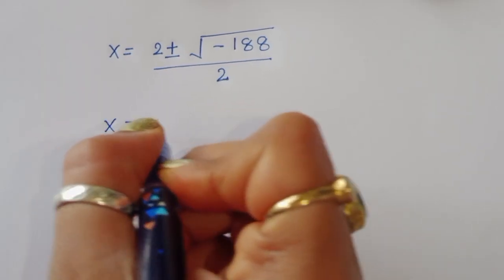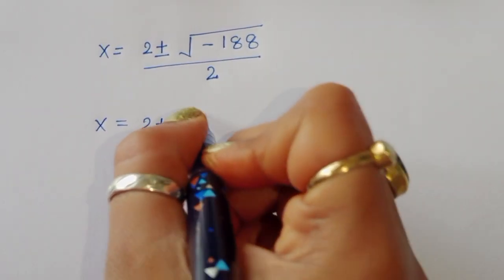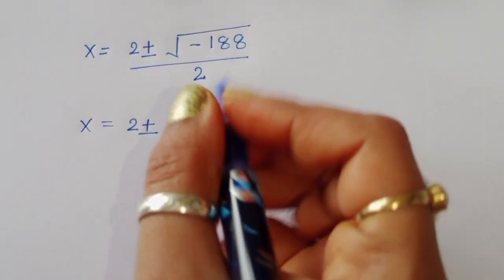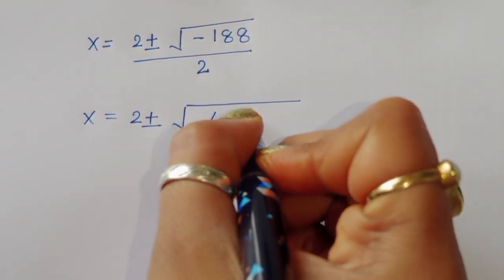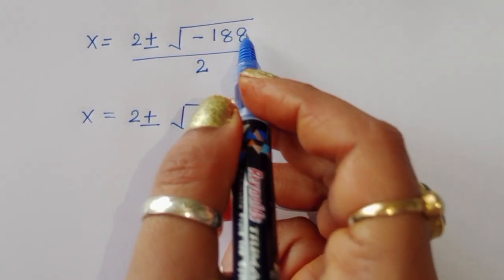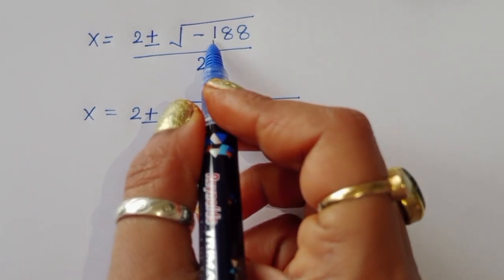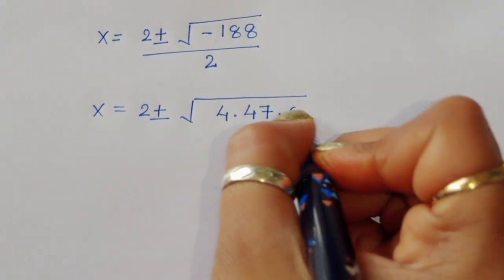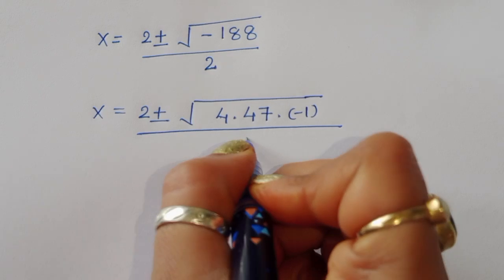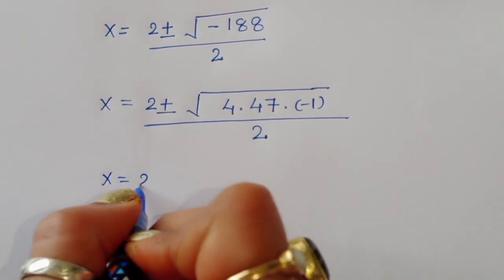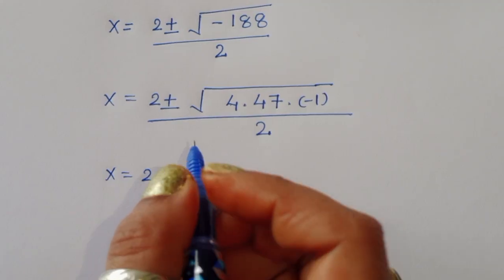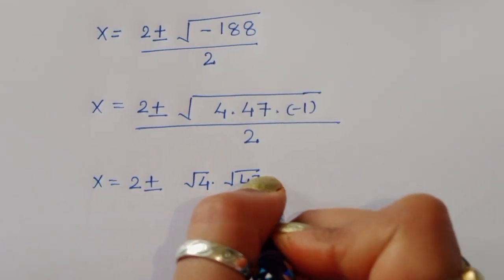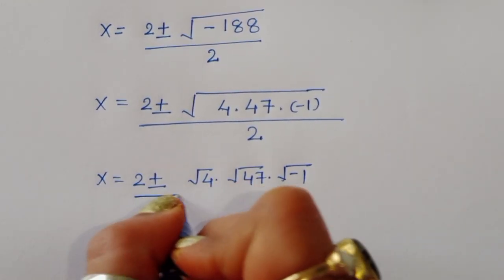We need to simplify square root of minus 188. We factor 188 as 4 times 47, and include the minus sign as times minus 1. So we write square root of (4 times 47 times minus 1) under the radical, divided by 2.